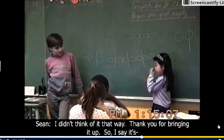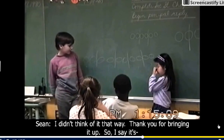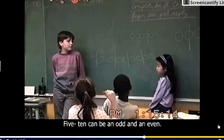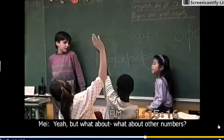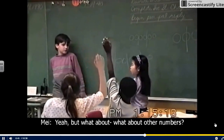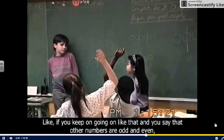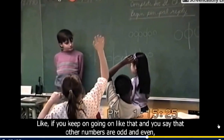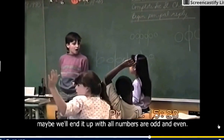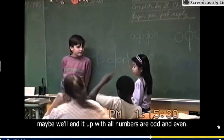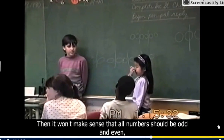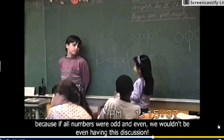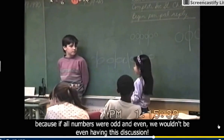I didn't think about it. Thank you for bringing it up. So if I say it's five, ten can be an odd and an even. What about other numbers — like if you keep going like that and say that other numbers are odd and even, maybe we'll end up with all numbers being odd and even. Then it won't make sense, because if all numbers were odd and even we wouldn't even be having this discussion.